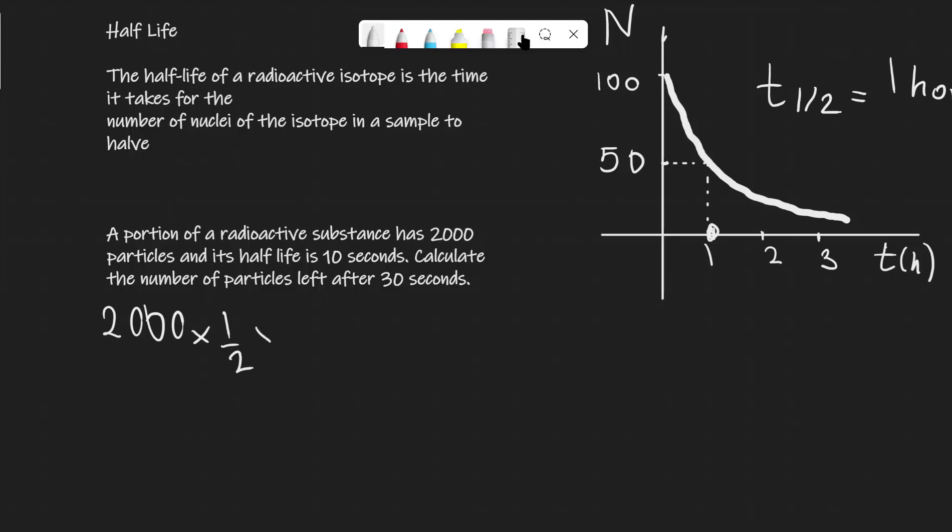After 20 seconds we're going to multiply this by half. And after 30 seconds we're going to apply one more half to this equation, which is equal to 2000 multiplied times 1 over 8, which is just equal to 250 particles.